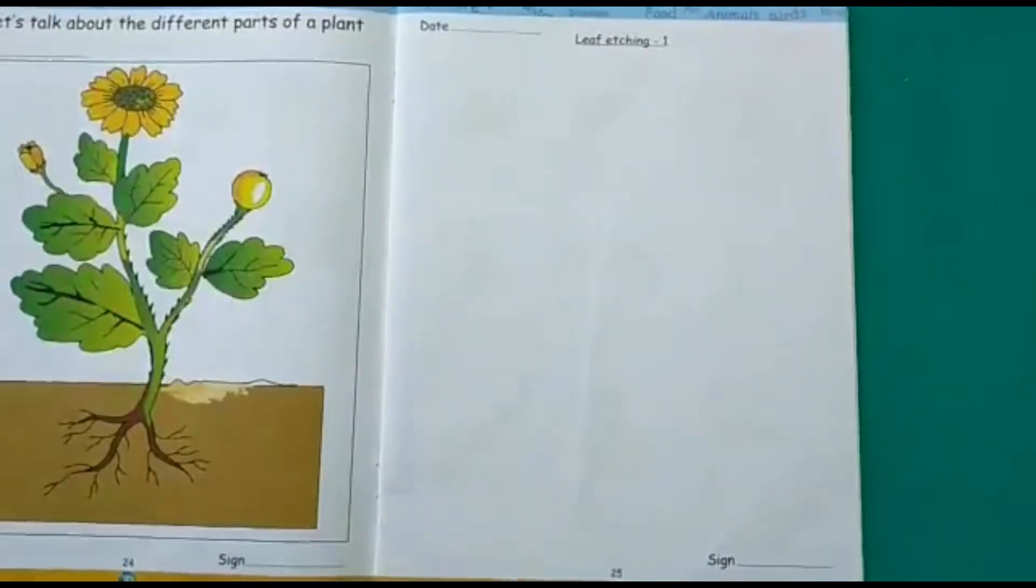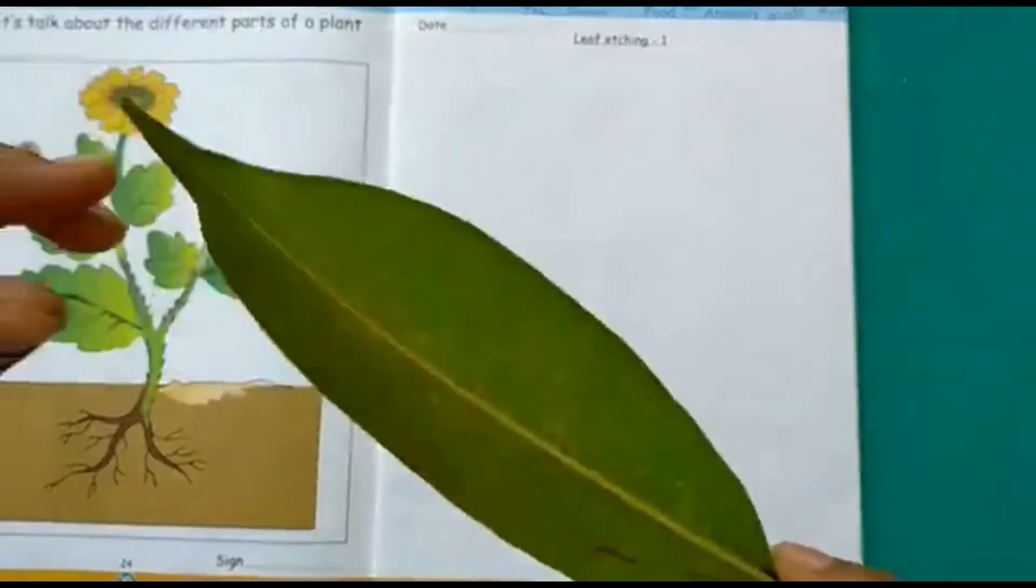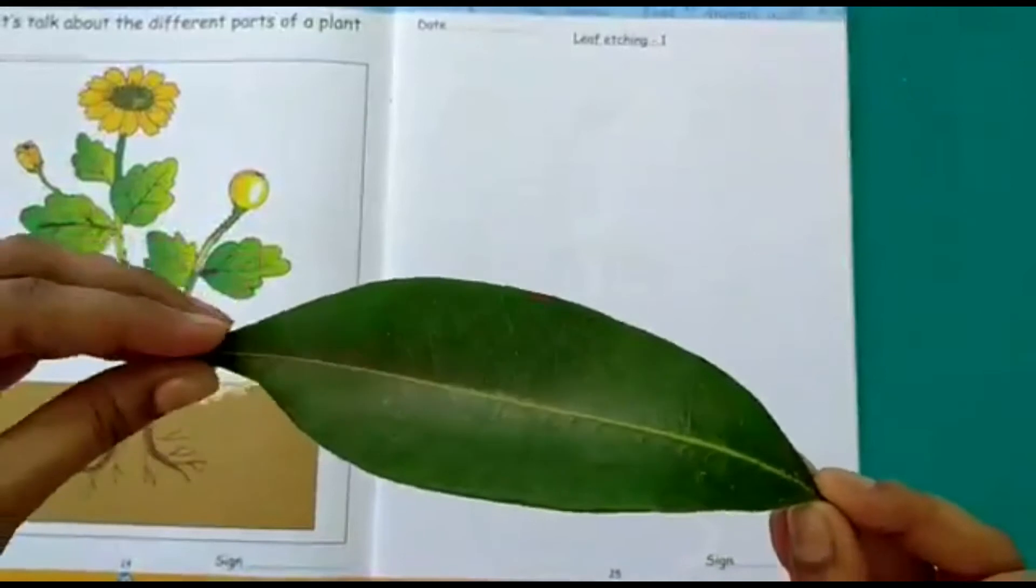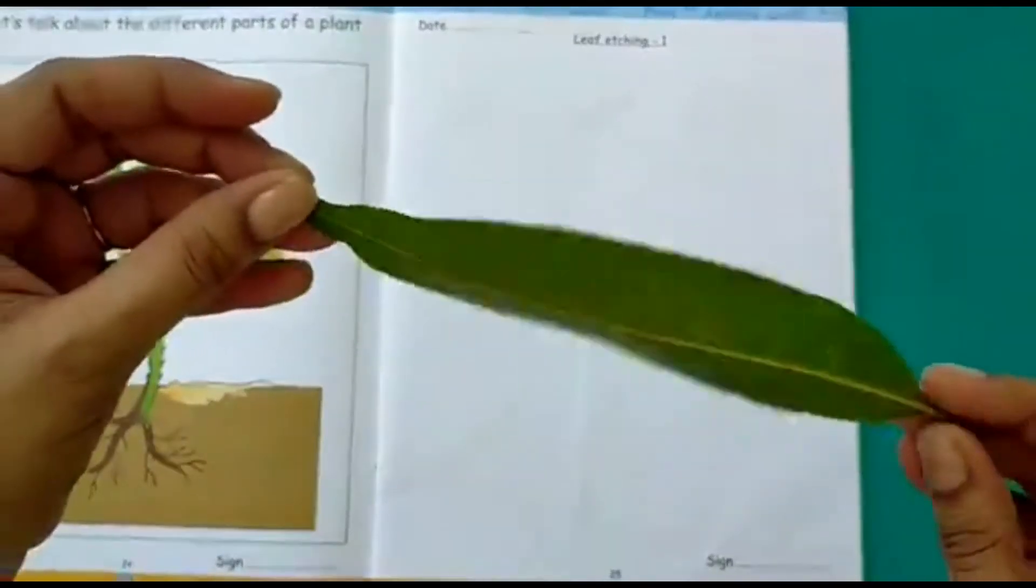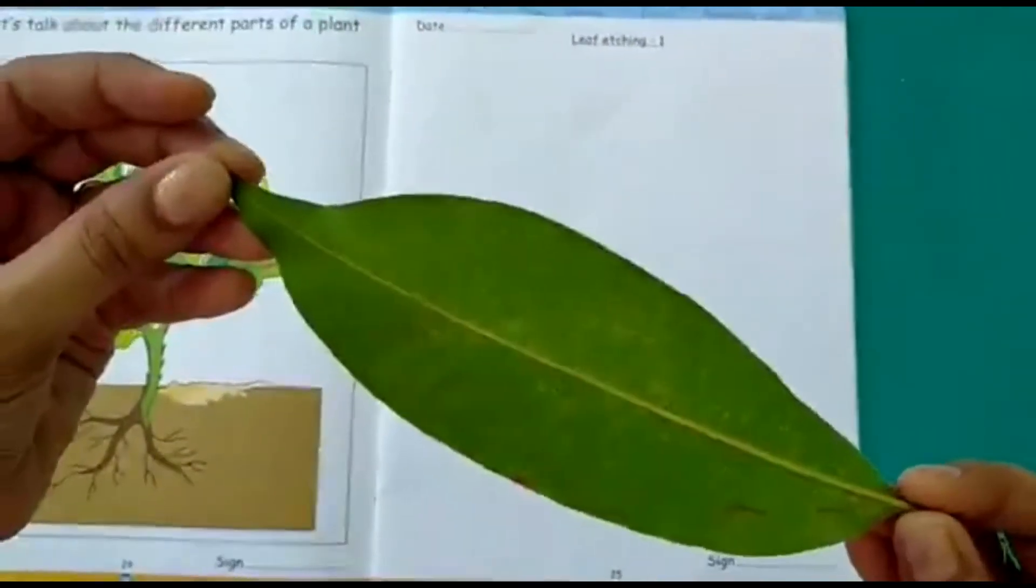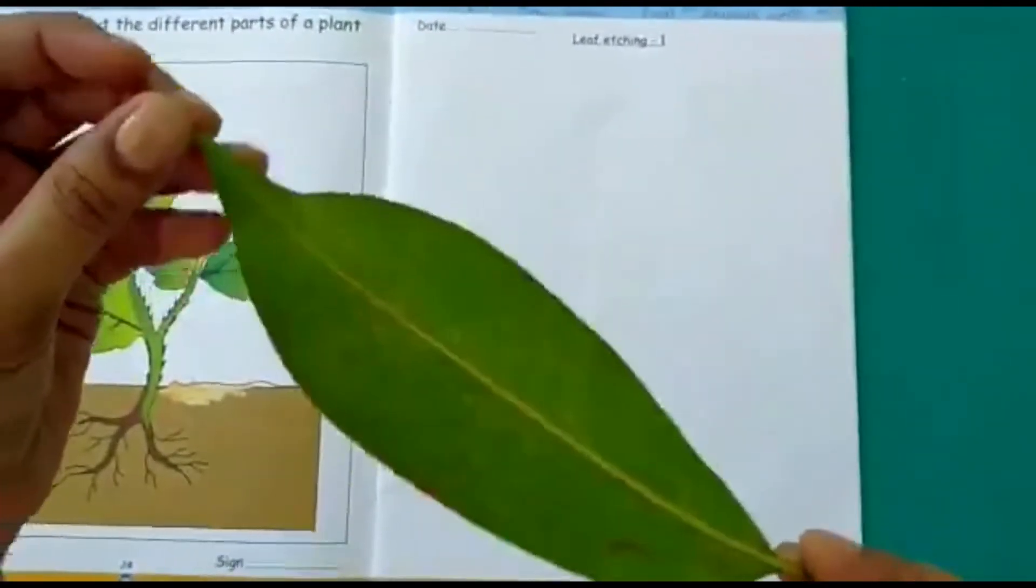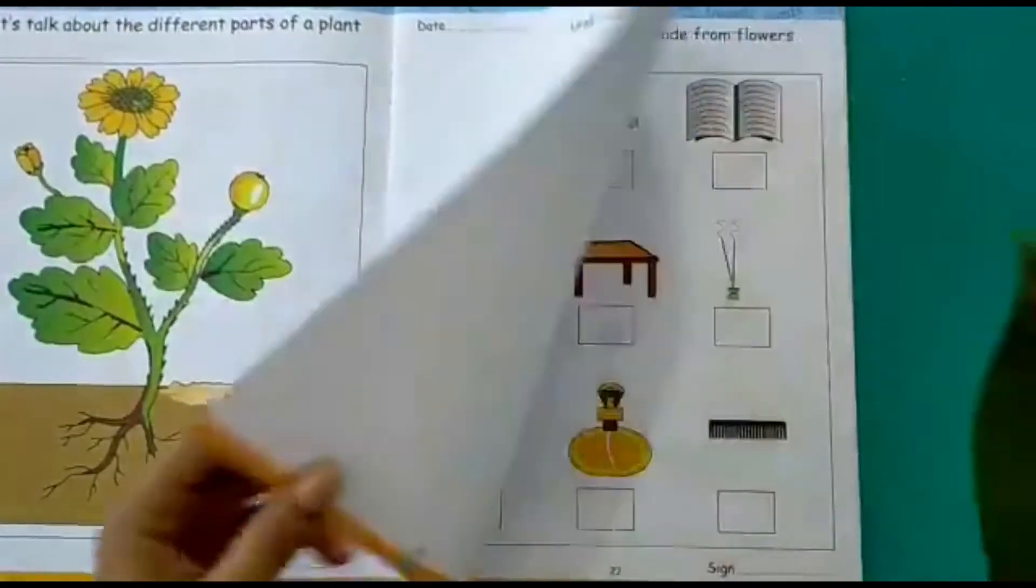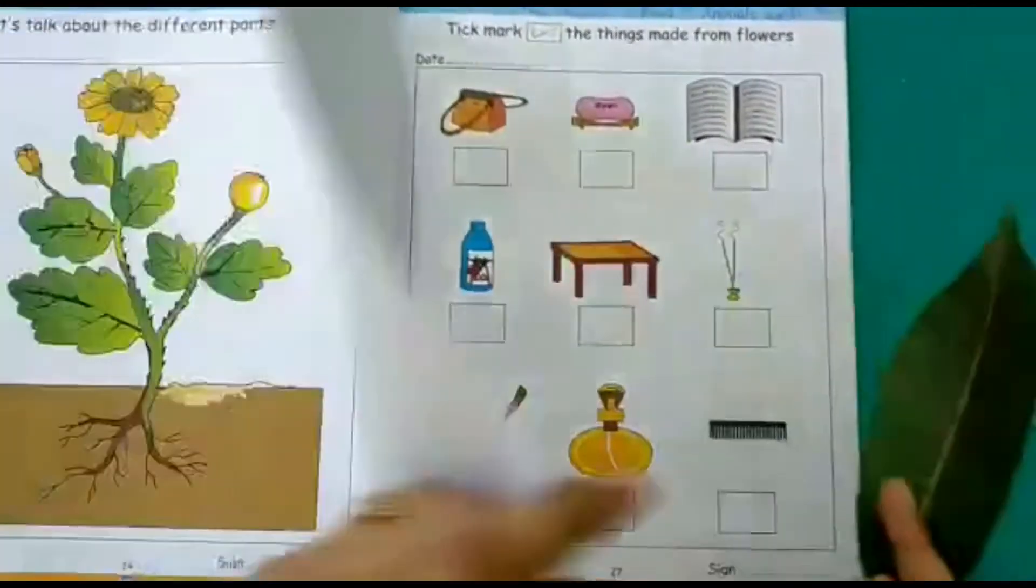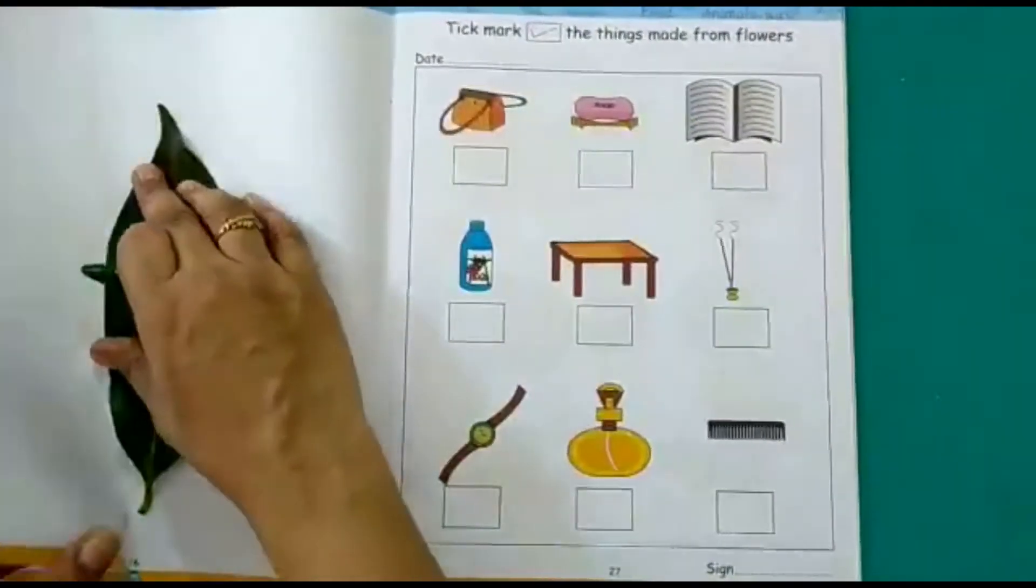What you have to do is you can take a leaf like this. You find so many leaves here, there are so many plants. You can ask your mother or father to get this type of a leaf. And then what you have to do is you have to place it on the back side of the page.